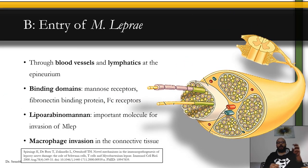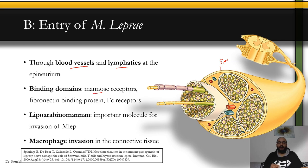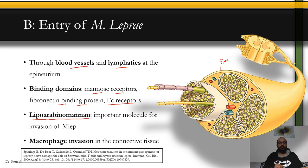M. leprae enters the nerves through blood vessels and lymphatics at the epineurium. The most important molecule responsible for invasion is lipoarabinomannan (LAM) — it is one of the most important antigens for M. leprae and the key molecule responsible for its invasion.